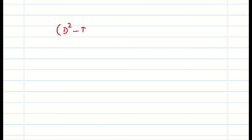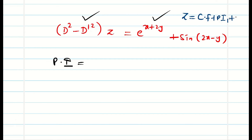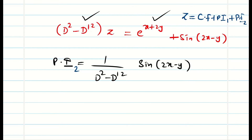Finally, one more problem: (d² - d'²)z = e^(x+2y) + sin(2x - y). This is Type 2 so I find PI alone for the sin part. The general solution is z = CF + PI₁ + PI₂. My concern is PI₂, so I directly compute PI₂ = 1/(d² - d'²) · sin(2x - y).